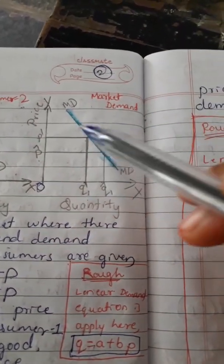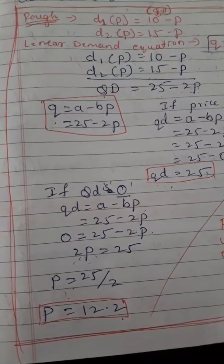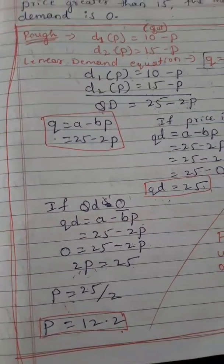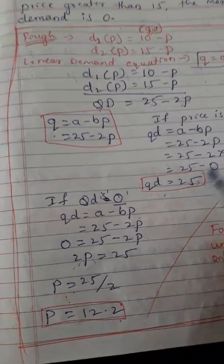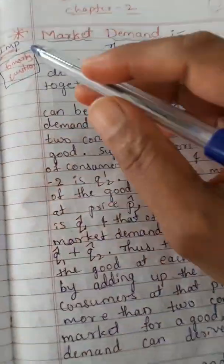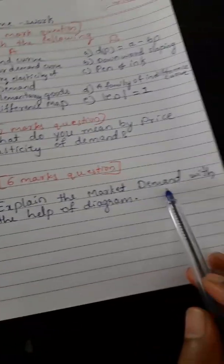We can use this linear equation to get the prices and quantity of demand in the market. This is the market demand. The price and quantity can be calculated using the linear equation for just two consumers in this example. This is a very important topic because it covers the six-mark question for the annual exam. A likely exam question is: explain the market demand with the help of a diagram.